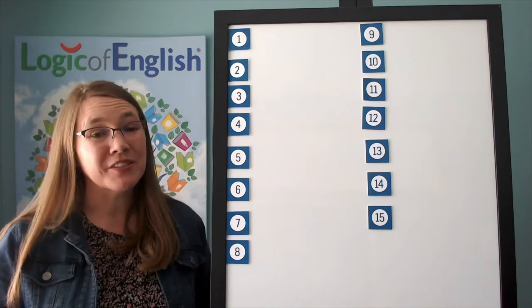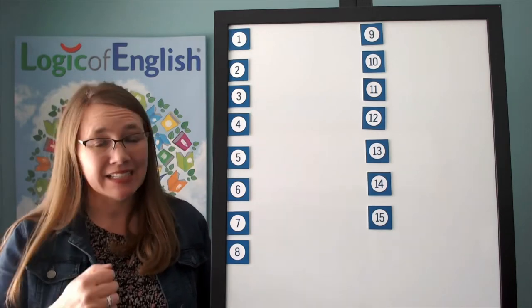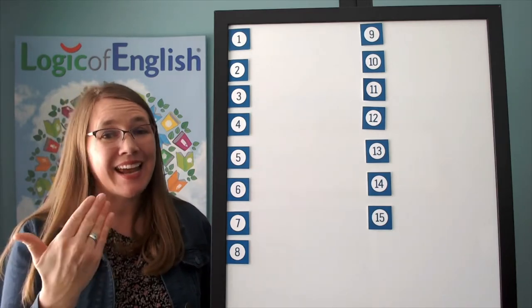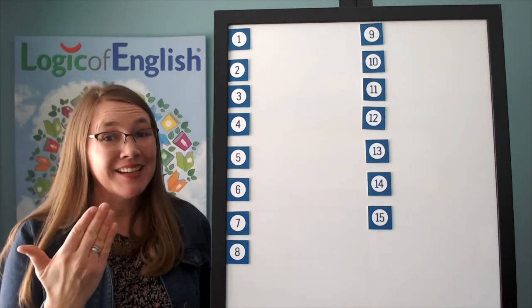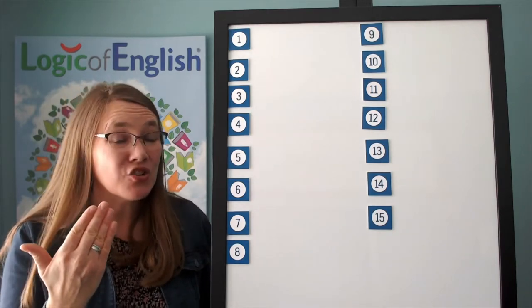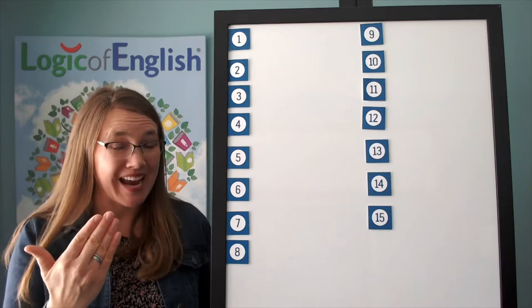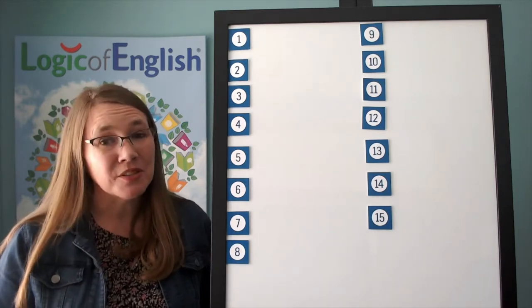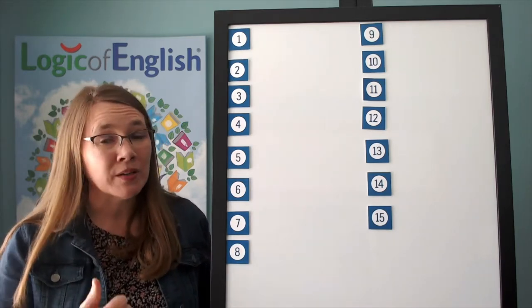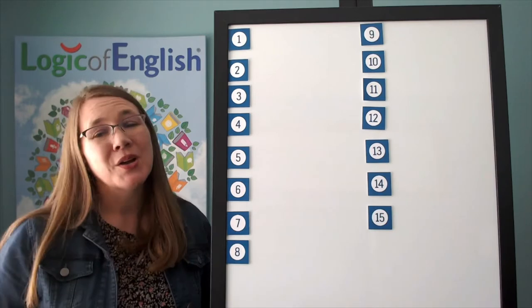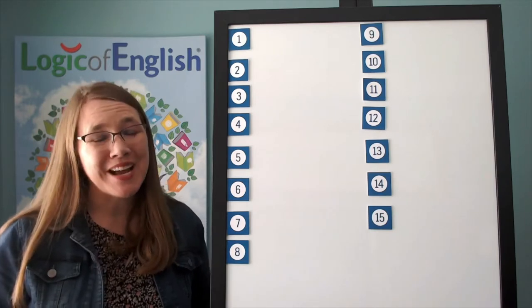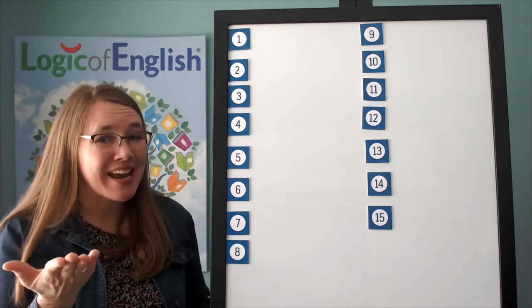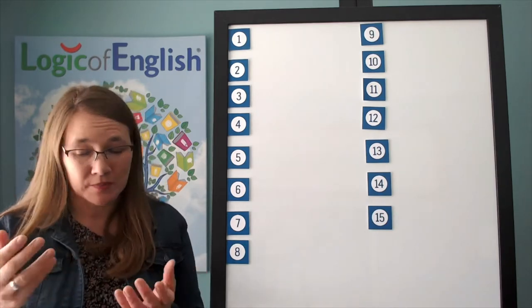Let's sound it out. The first syllable is nay. N-ay. That's right. It's our new phonogram A-I. The second syllable is bore. B-or. Go ahead and write nay-bore.